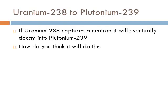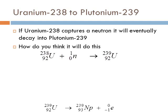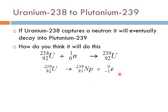If a neutron has too much energy, it will instead be captured by uranium-238, which simply becomes uranium-239 without splitting. Uranium-238 captures the neutron and eventually decays into plutonium-239. This is an induced nuclear reaction: we shoot a neutron into uranium-238 to make uranium-239, which then naturally undergoes beta decay to neptunium-239, and then another beta decay into plutonium-239.